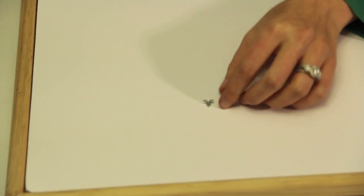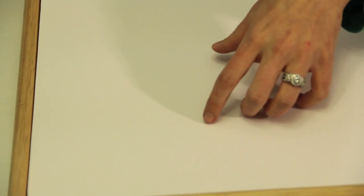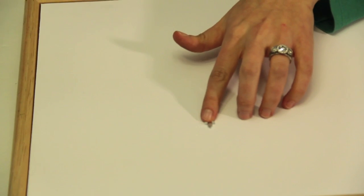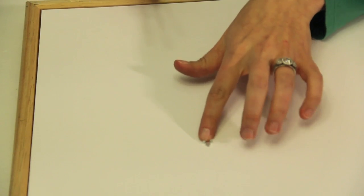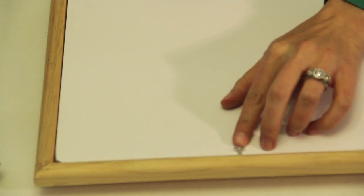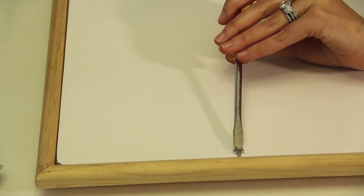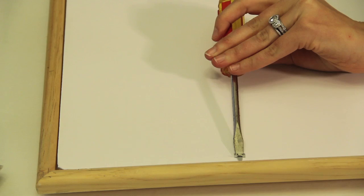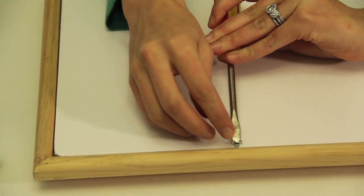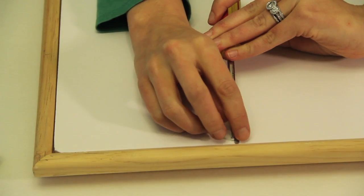First you want to take your glazing points with the point headed toward the frame, the side of the frame, and these little pieces sticking up. So you want to stick it towards the frame, take your flathead screwdriver, and use the pressure from the two sides to get it really good and stiff.